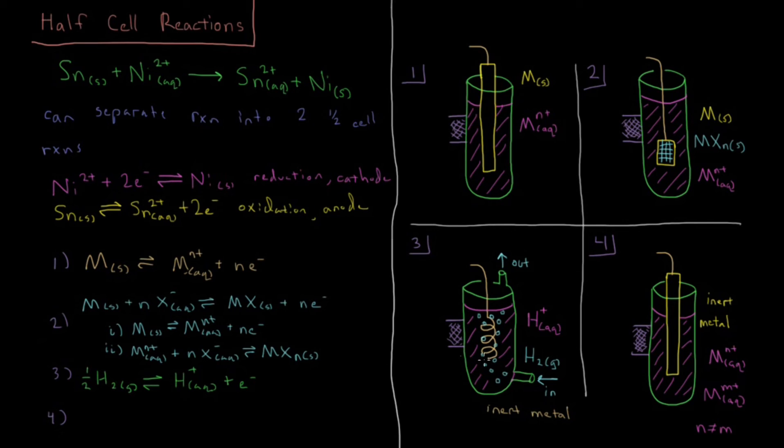So it gets bubbled over that and it reacts with the hydrogen ions in solution. So it can produce hydrogen ions and then an electron which will flow out of this half cell into the other side, and then that gas can flow out at the top.